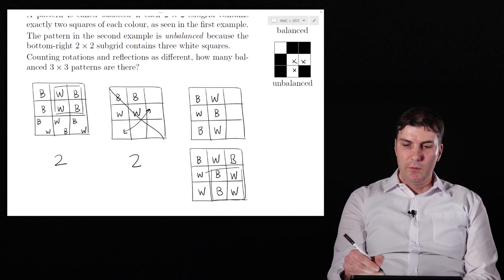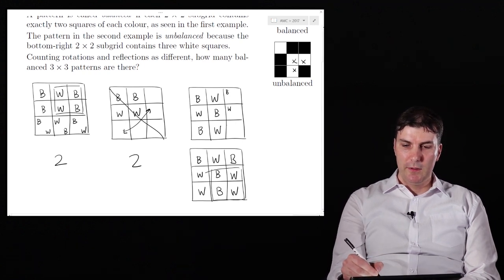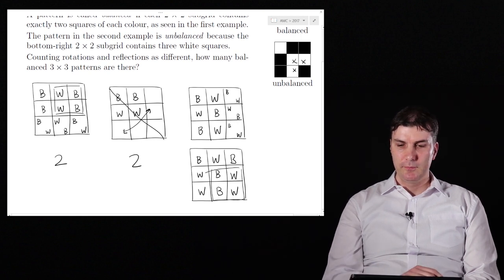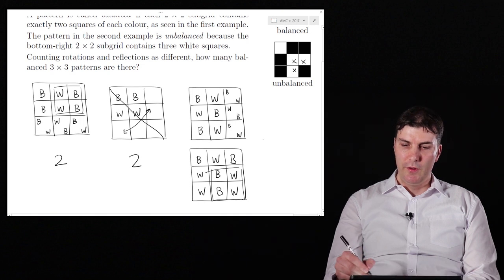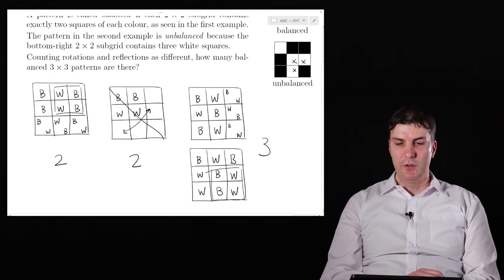In that top situation, we've actually got a bit more flexibility, so we can go black white black or white black white, just like we saw in the first example. And so overall, there are three ways that we can do this arrangement.